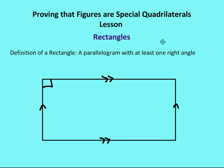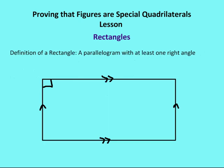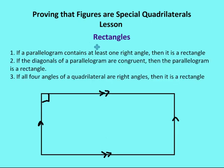We have a rectangle. The definition of a rectangle is a parallelogram with at least one right angle. The first way to prove that a quadrilateral or a parallelogram is a rectangle: if a parallelogram contains at least one right angle, then it is a rectangle. So this goes back to the definition, and there's really no proof required. If a parallelogram contains at least one right angle — as we see here with opposite sides that are parallel — then it is a rectangle by definition.